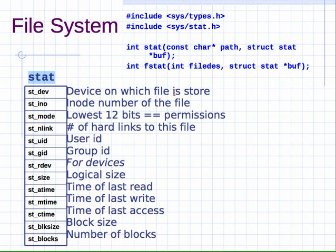Fields in `struct stat` include: the device on which the file is stored, the inode number of the file, the permissions (the lowest 12 bits of `st_mode` — read, write, execute for owner, group, and others), number of hard links to the file, user ID of the owner, group associated with the file, size in bytes, and the number of blocks and block size.